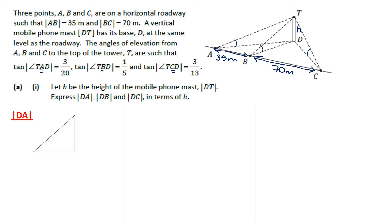Let's start with DA. I'm going to draw a little triangle to work with. So here is A, here is D, here is T, this is my height H, and this is the angle I'm working with. When we're given the tan, remember tan is opposite over adjacent. This 3 over 20 doesn't mean the opposite side was 3 and the adjacent side was 20 — it means that when the opposite was put over the adjacent, the fraction simplified down to 3 over 20. So we can use this to write DA in terms of H, but we can't go straight to numbers.